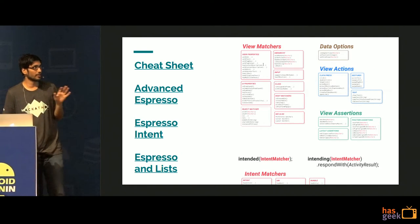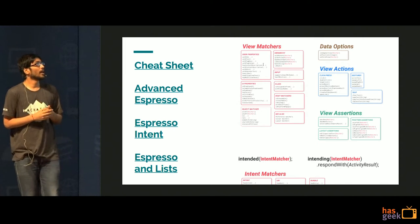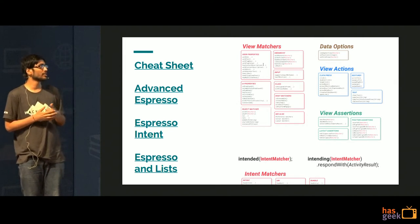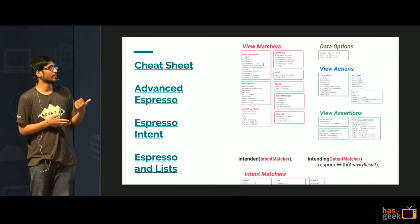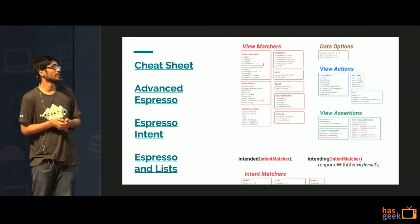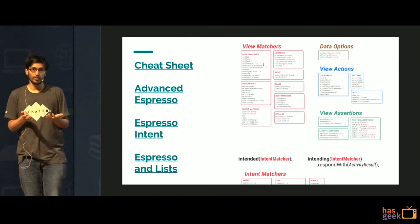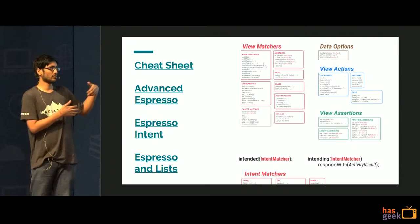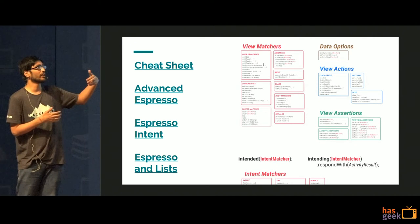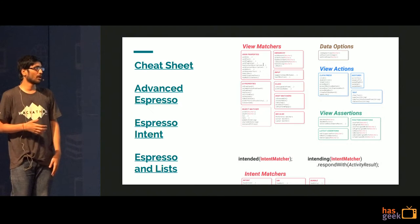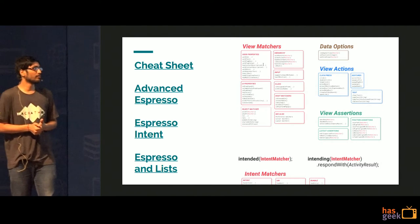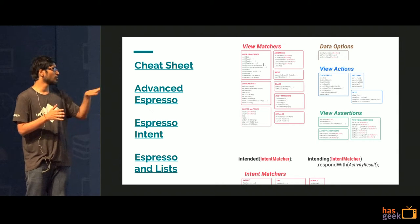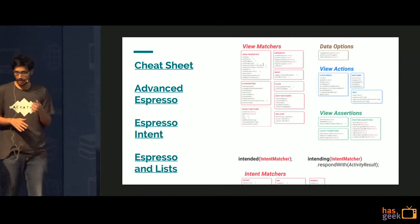Here is a cheat sheet. We already talked about withId; there is also withText and withHint. For view actions: click, long click, scroll for list view — if you have a scrollable login view you may need to scroll before clicking a button. There are data options for list views and many view assertions. I have added links to all those resources.